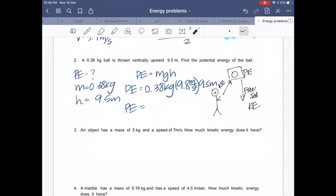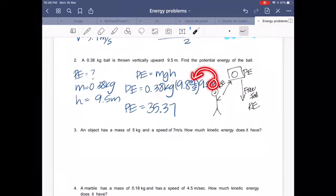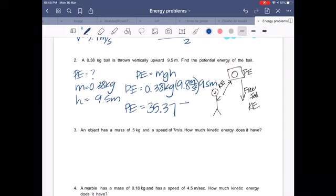And it's 35.37. And if you put together kilograms times meters over seconds squared and another meters, this means that these meters will come here and will become a square. So you'll have kilogram meters squared over seconds squared, which is the same as joules.